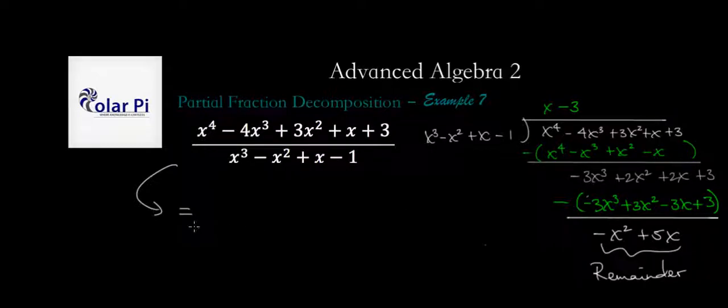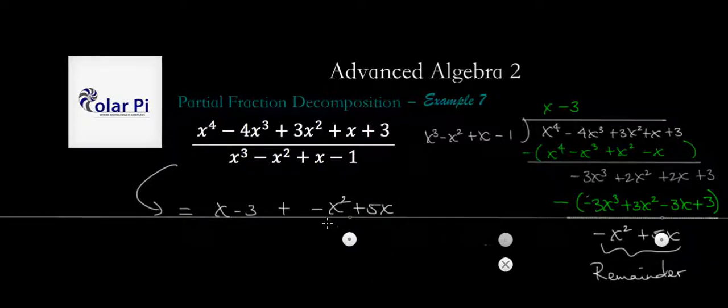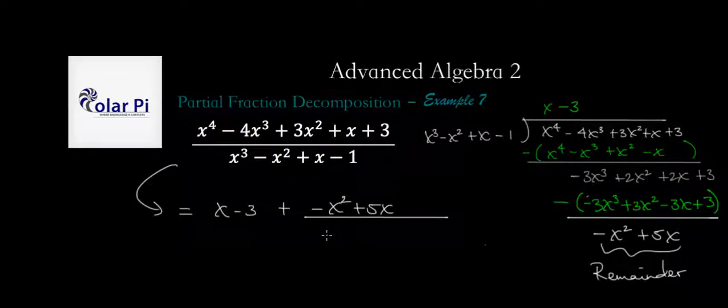Once we're done with this, we have to write it this way, which is write x minus 3, which is the quotient, plus the remainder, which is negative x squared, plus 5x, divided by, we always have to write the remainder divided by the divisor. So the divisor is the thing we divide by, and that's this denominator here. It's the same either way.